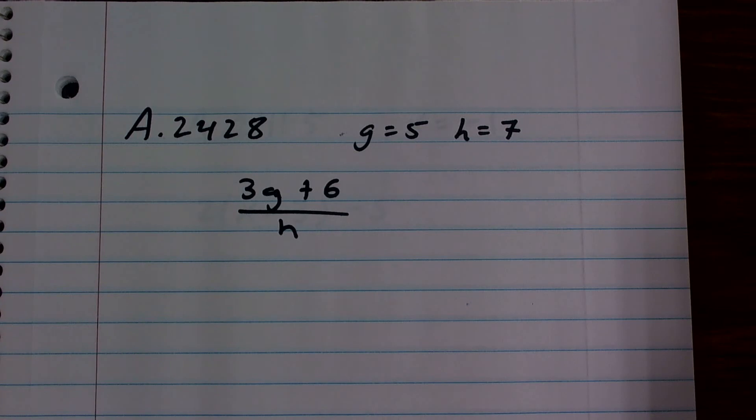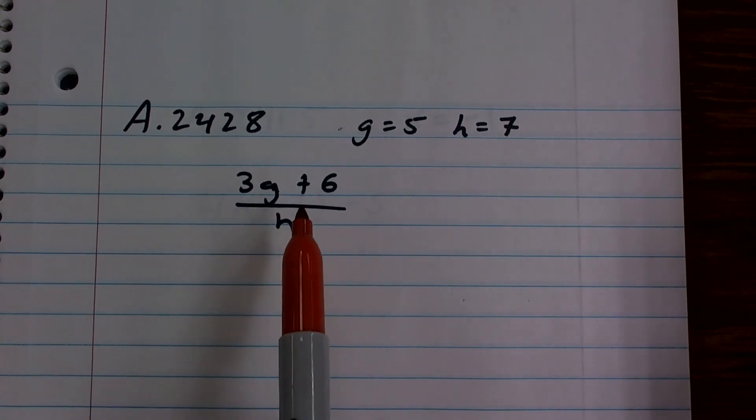OK, now we got a little division going on here. So what we have here is I have 3 times the number g, plus 6, divided by h.